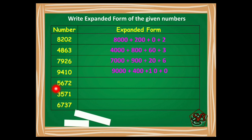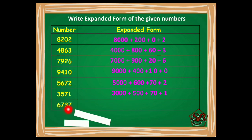Moving on to the next one, 5672. Expanding this — ones, tens, hundreds and thousands — so 5000 plus 600 plus 70 plus 2. Next, 3571 will be written in expanded form as 3000 plus 500 plus 70 plus 1. Then 6737: looking at the place values, we will expand it as 6000 plus 700 plus 30 plus 7.